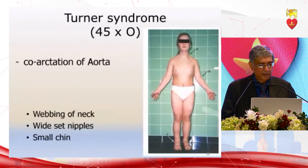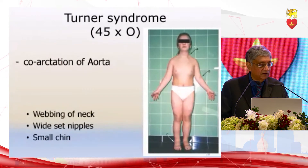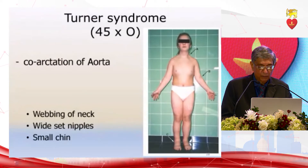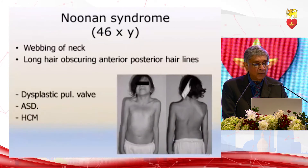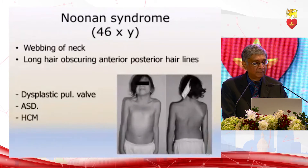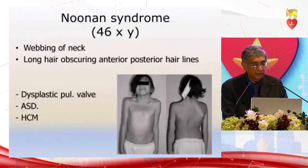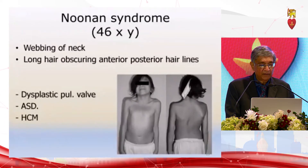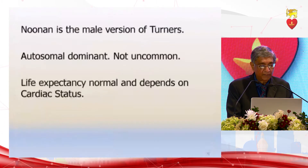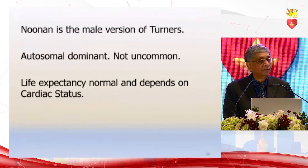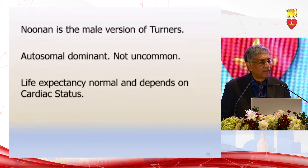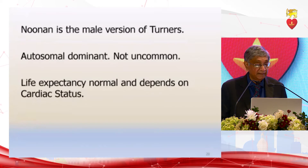Turner syndrome is associated with coarctation of the aorta. You see the webbing of the neck, wide-set nipples, and small chin. Noonan syndrome again presents with webbing of the neck, long hair obscuring the anterior and posterior hairlines, and is associated with dysplastic valves, atrial septal defects, and hypertrophic cardiomyopathy. Noonan syndrome is considered the male version of Turner's — it is autosomal dominant and not uncommon.